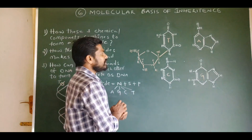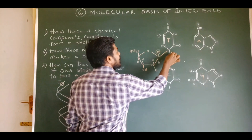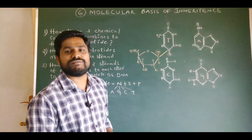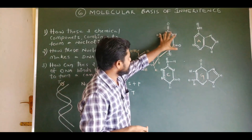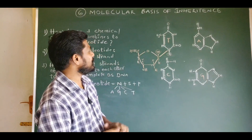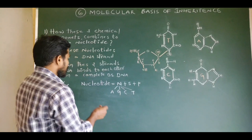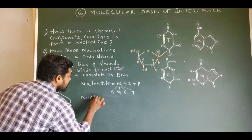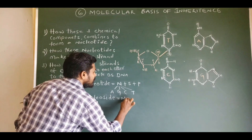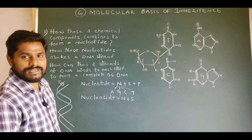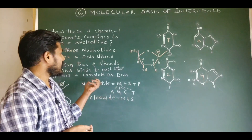One molecule of water gets eliminated from the hydroxyl group of the pentose sugar, and the hydrogen of the nitrogen base is released in the form of water, forming a glycosidic bond. This part of the nucleotide lacking a phosphate group is considered to be a nucleoside — a combination of nitrogen base and pentose sugar only. If it has a phosphate group, it becomes a nucleotide.